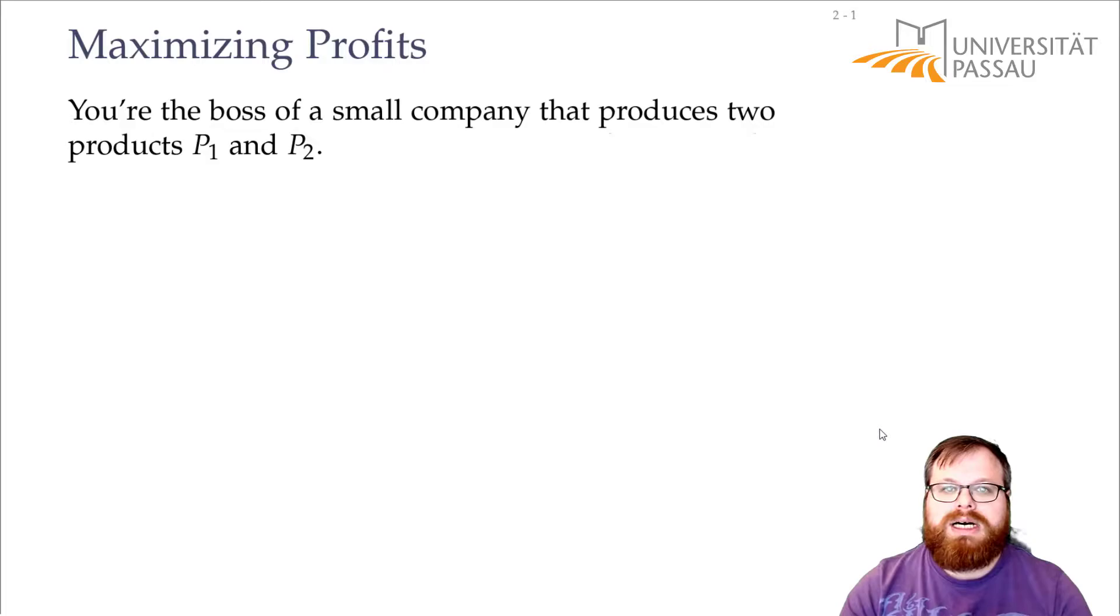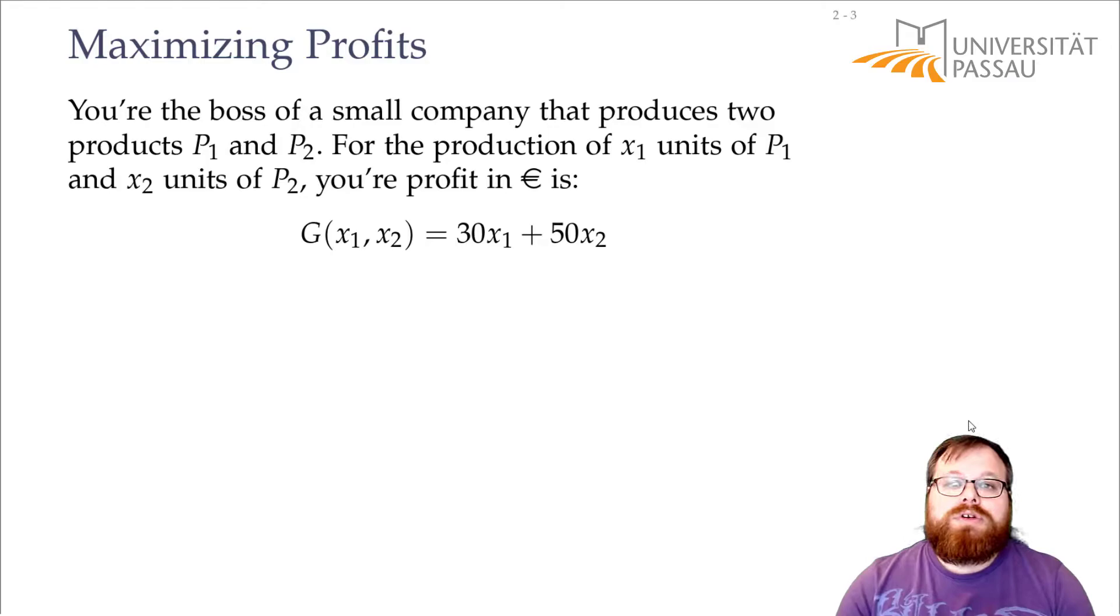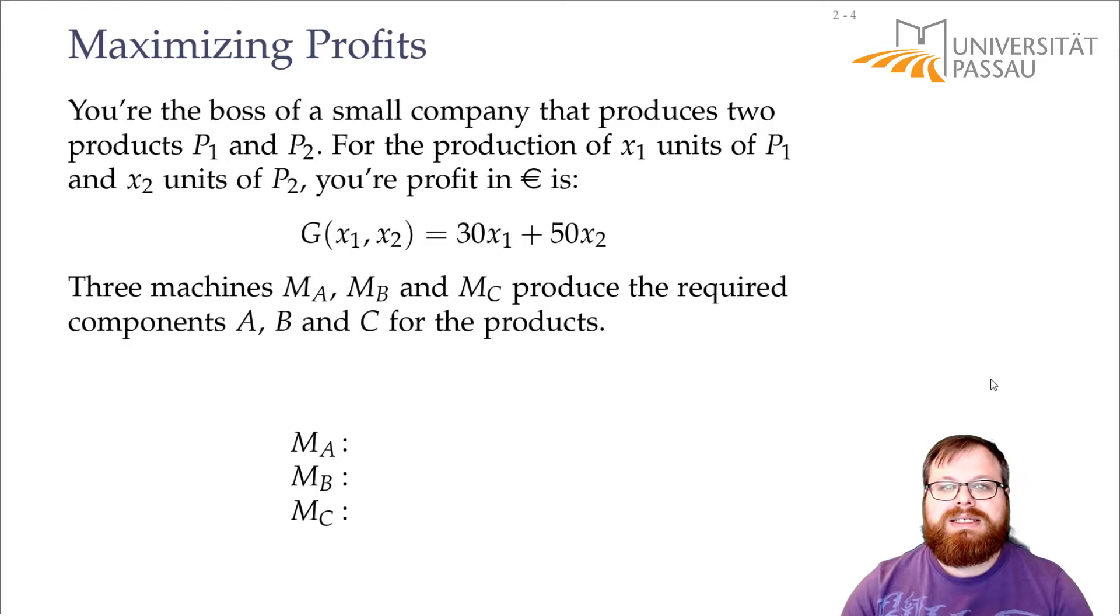Let's start with our small problem. You're the boss of a small company and you want to produce two products. For example, you want to produce some keyboards and some mice. For producing x1 keyboards and x2 mice, your profit is 30 times the number of keyboards you produce and 50 times the number of mice. Of course, that would mean if you want to maximize the profits, then you want to create as many mice as possible.